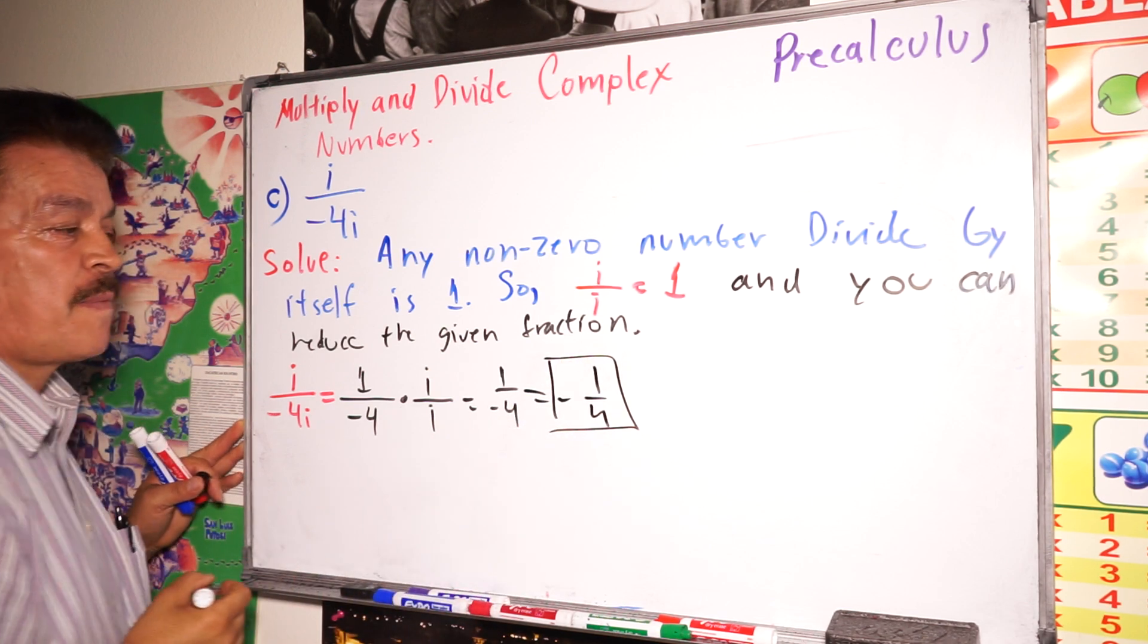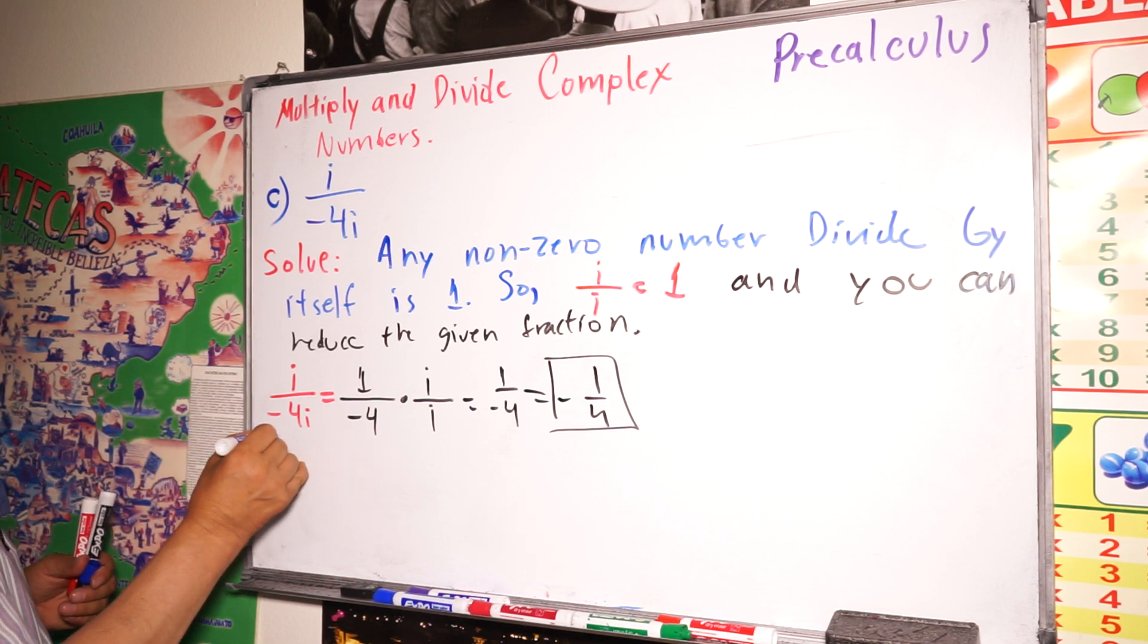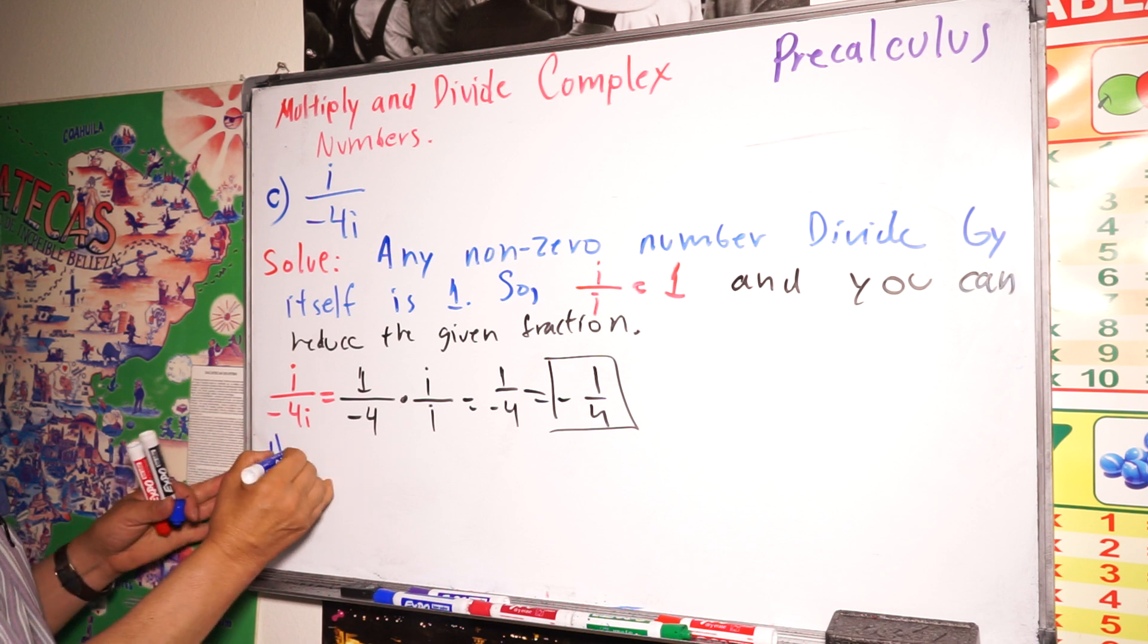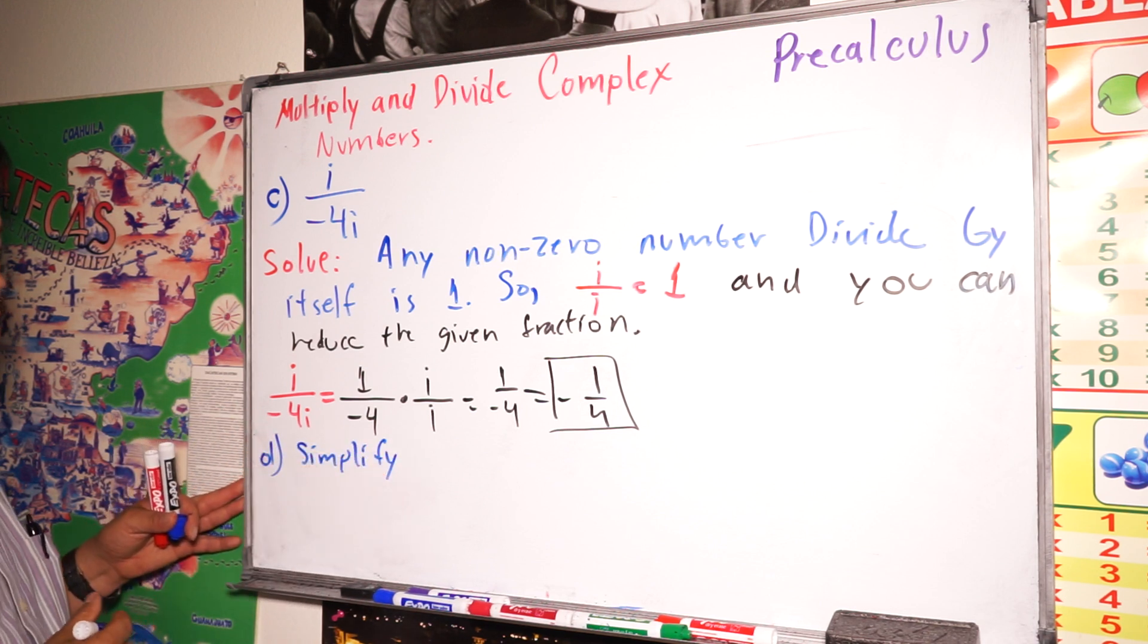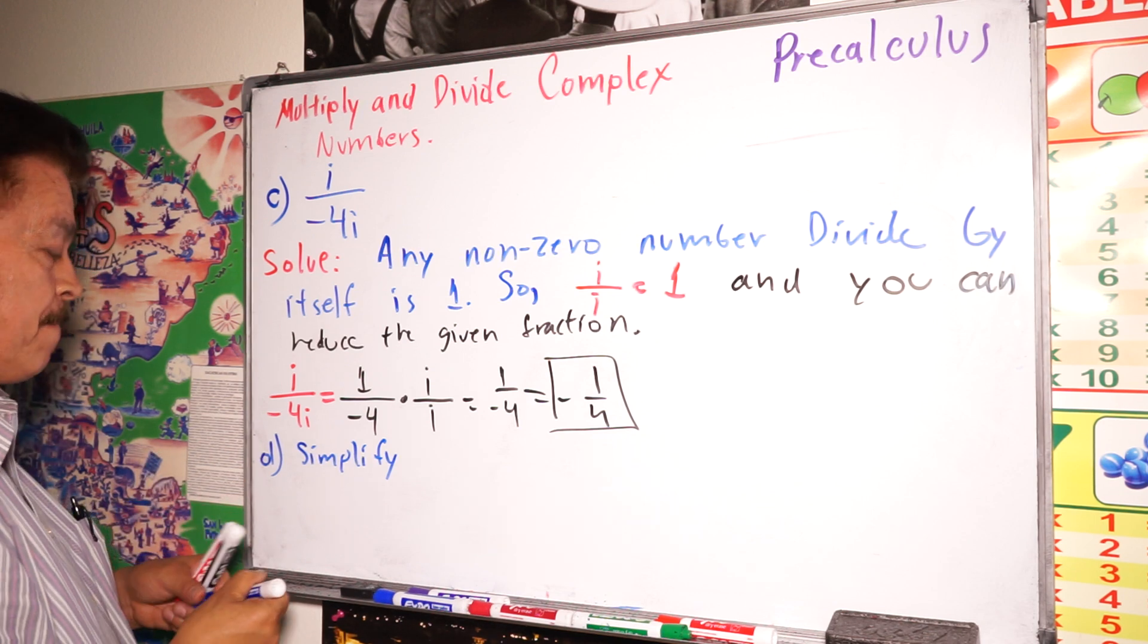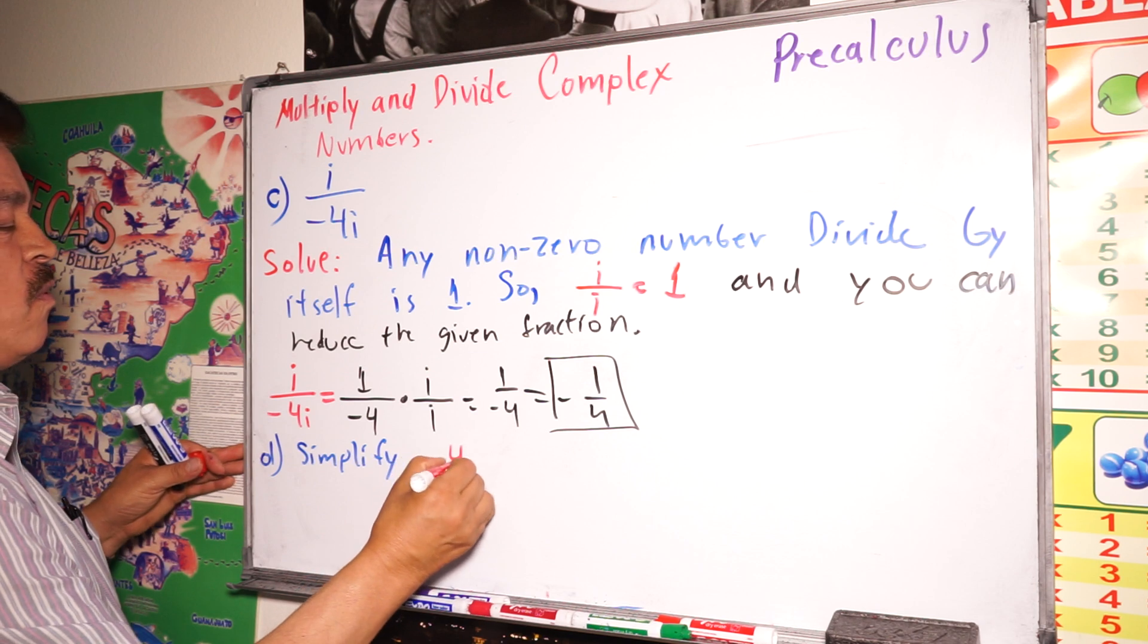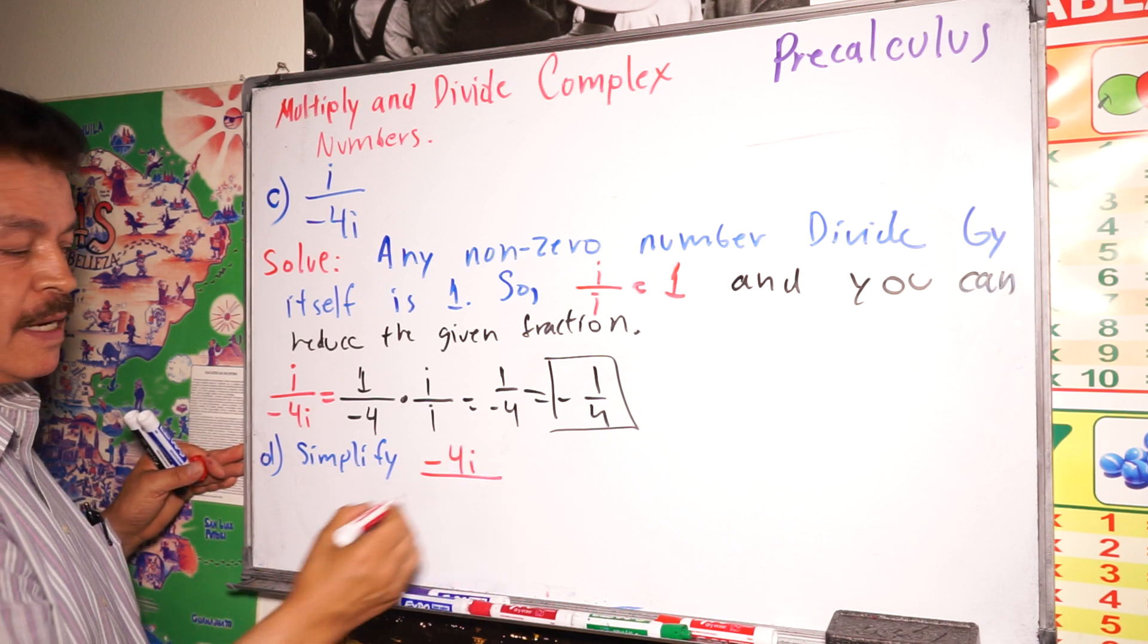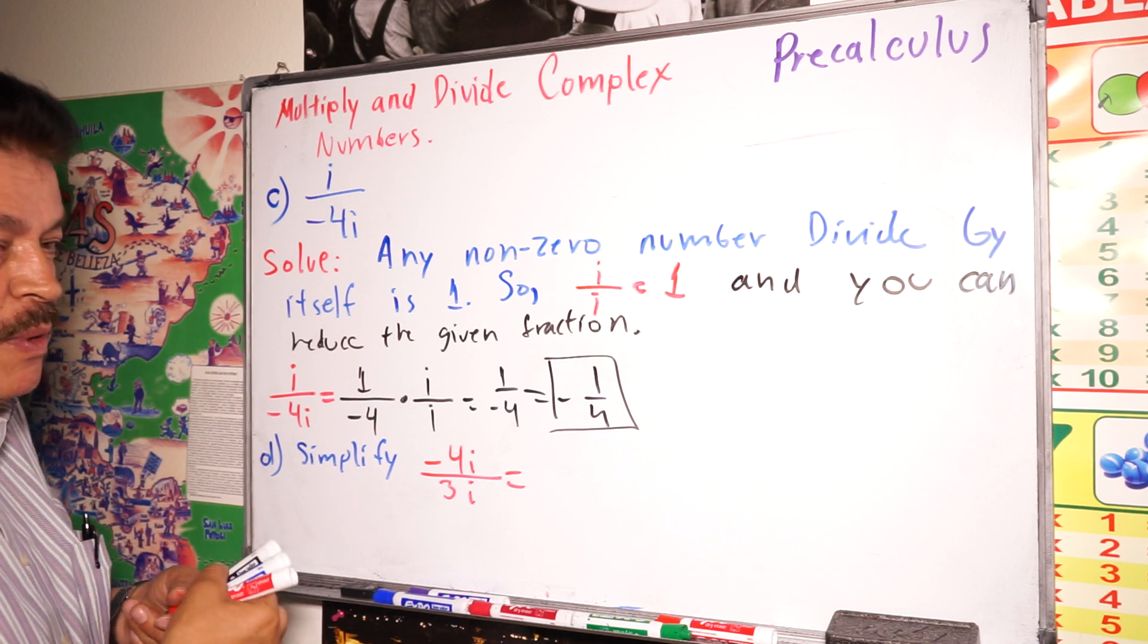Very easy. Let's do another one. Another example here. Simplify negative 4i divided by 3i.